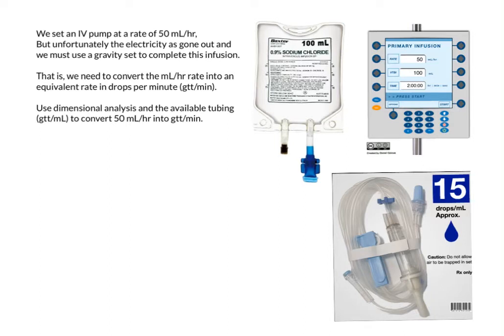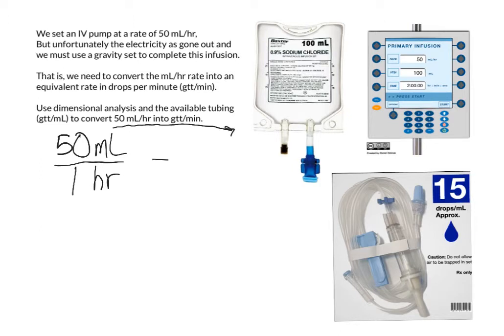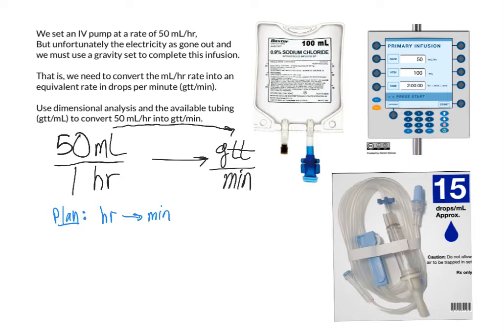When we use dimensional analysis, we always start with what it is we want to convert, what we want to change. So I have 50 mLs over one hour. At the end of my dimensional analysis, what I want to convert this to is drops over minute. So recall, we like to make a plan of how we're going to do this. I see the denominator going from hours into minutes — that's a conversion I know. So I'm going to use my understanding of time conversions to turn hours into minutes.